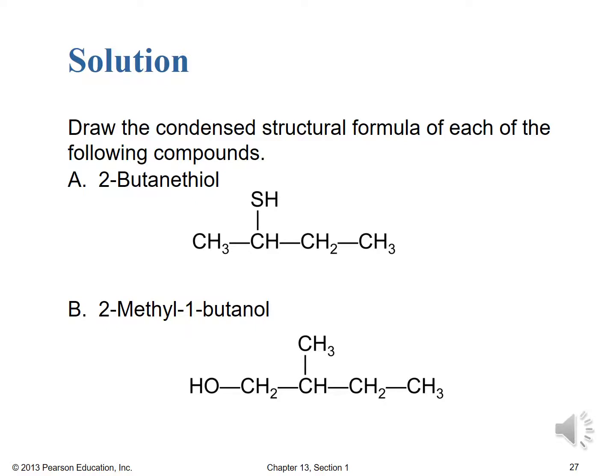For 2-butanethiol, draw four carbons of butane and add an SH group at position 2 to give the thiol, then fill in the remaining hydrogen bonds. For structure B — a regular alcohol, not a thiol — draw four carbons for the 'but' prefix, place an OH at position 1 and a methyl group at position 2, filling remaining valences with hydrogens.